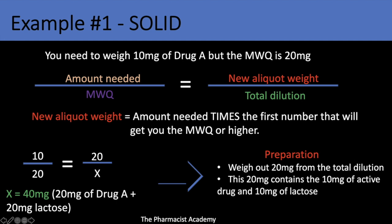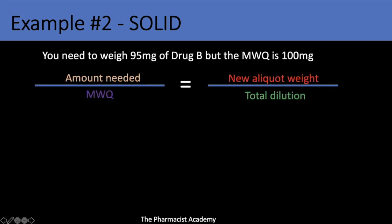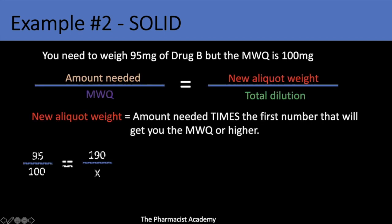Example number two: you need to weigh 95 milligrams of drug B, but the MWQ is 100 milligrams.